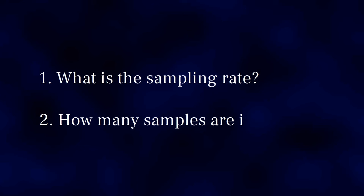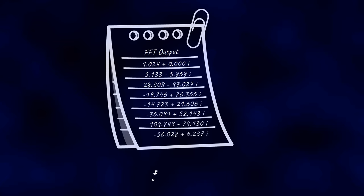Specifically, what was the sampling rate you sampled your signal at? And how many samples were fed into your FFT? Once you know these two parameters, you can work out the frequency of each item in the list from its position using the following equation.